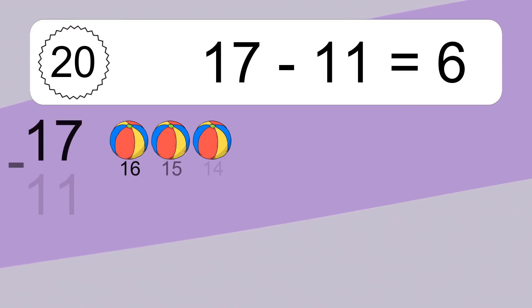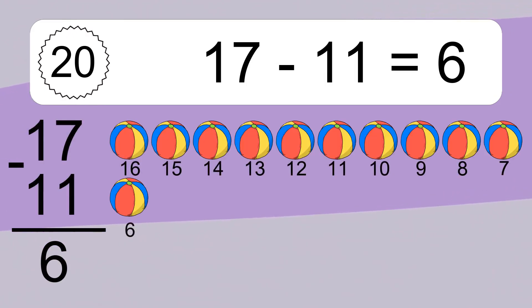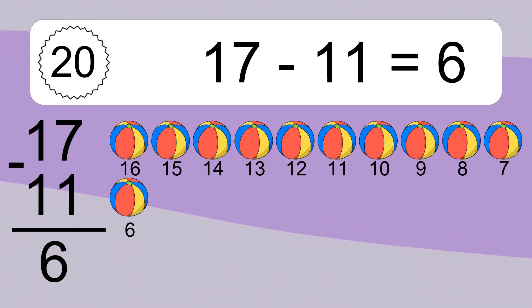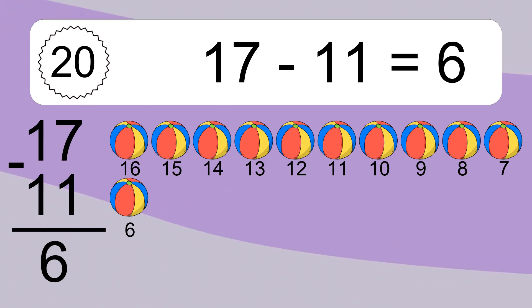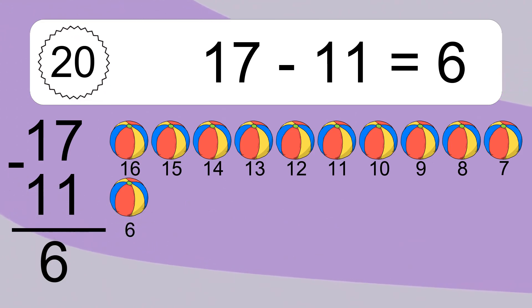17 minus 11 equals what? 17 minus 11 equals 6. Let's count it: 16, 15, 14, 13, 12, 11, 10, 9, 8, 7, 6.